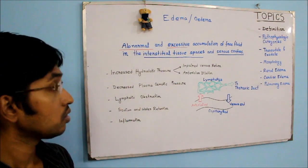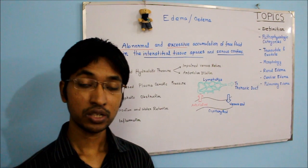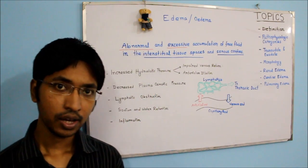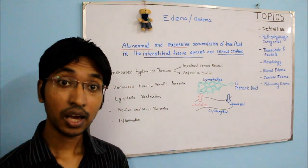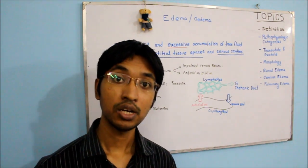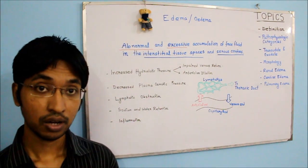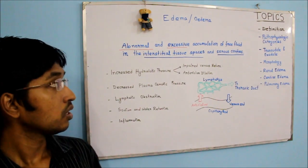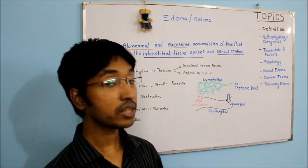The last pathophysiologic category of edema is edema due to inflammation. During inflammation there is increased vascular permeability, and that is the major mechanism by which edema occurs during inflammation. Always remember that edema in inflammation is always exudative in nature. Now we will move on and talk about the concept of transudate and exudate.